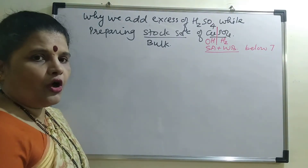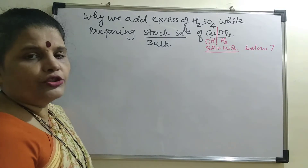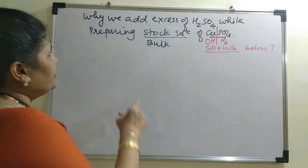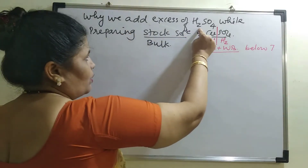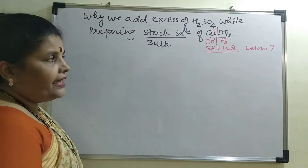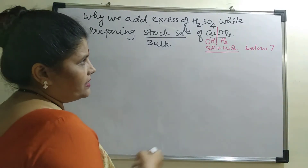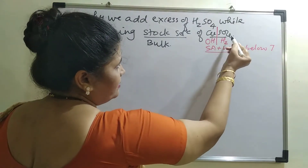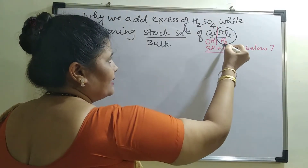Because it is a salt of a strong acid, the pH of the solution will be below 7, and so we will be adding excess of H₂SO₄. A second hint to remember: looking at the acid component, which is H₂SO₄, that is the acid we will be adding.